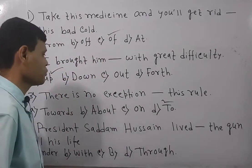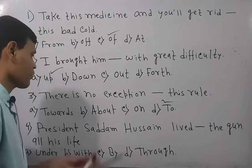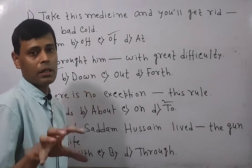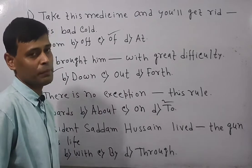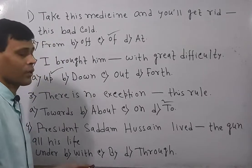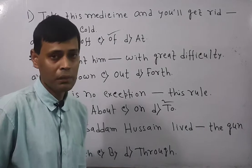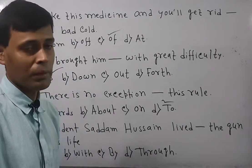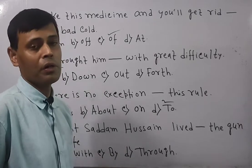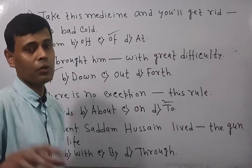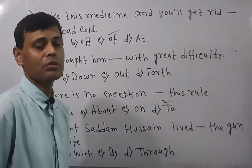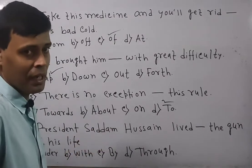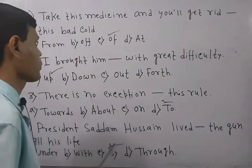Now look at the next question: 'President Sardar motioned to live ___ the gun.' There are four options: under, with, by, through. Whenever someone is living in some way and you are highlighting the means, you need to select the preposition 'by.' In general, 'under' and 'with' can be used as a preposition of instrument, but here it is not about the instrument — it is about the means, about how you are going to live. So 'under,' 'with,' and 'through' are eliminated, and 'by' is the perfect answer.